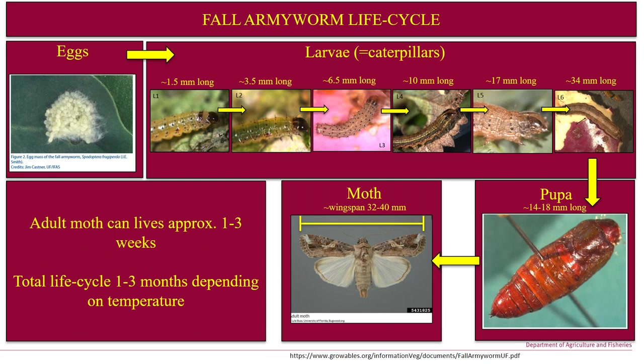The moth itself has a wingspan of 32 to 40 millimeters wingtip to wingtip, with different individuals being different sizes. The moths themselves live for about one to three weeks, and the total lifecycle can vary from one to three months, which is dependent on the season — during summertime that will be quicker, of course.